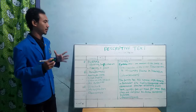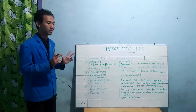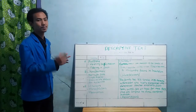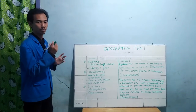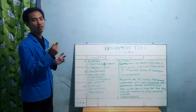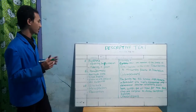So, what is descriptive text? Descriptive text is a text that describes some things — objects, people, situations, conditions, animals, etc.